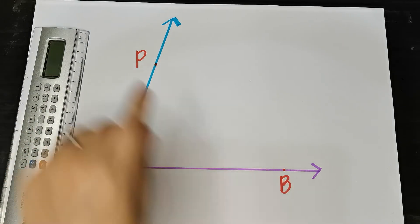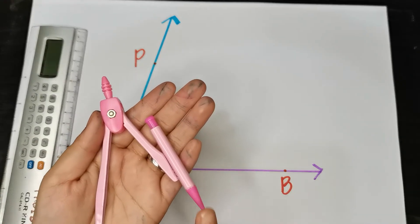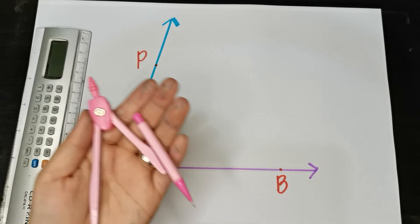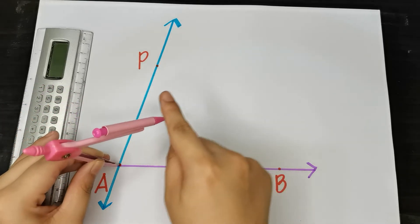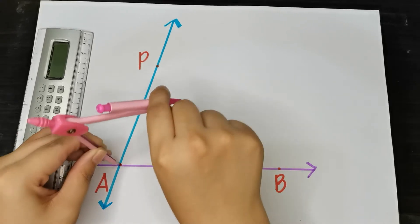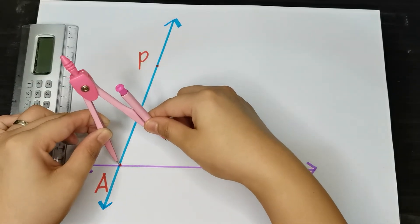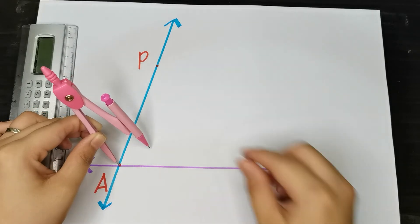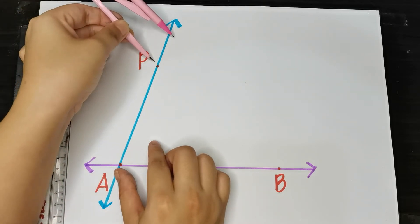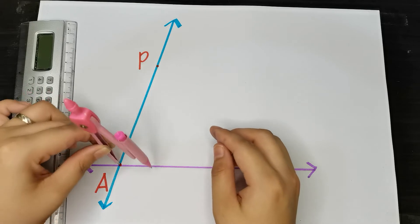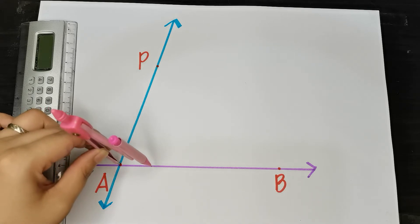And what we are going to do is create a parallel line here. To do that, of course, you need your compass. Step number one is to place your compass point here on point A. Then adjust the compass width — not too big, just a moderate size that we can replicate at the other point. Then draw an arc crossing these two sides, or two rays, or two lines.